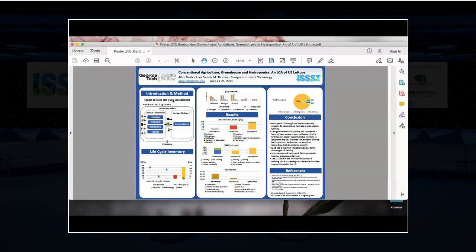So I think we're going to kick off today with Aline Bamboukian. I apologize for that. That's okay. I will share my screen. Hi everyone. My name is Aline Bamboukian. I'm a PhD student in Public Policy at Georgia Tech. And today I will present to you my project titled Conventional Agriculture, Greenhouse and Hydroponics, NLCA of U.S. Lettuce.